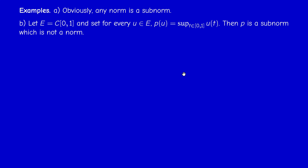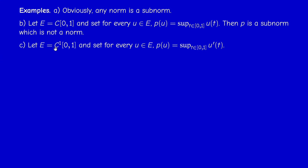This is a sub-norm but not a norm, because if P(u) = 0, it doesn't mean u = 0; it just means u is negative or zero, since we are not taking the absolute value. Similarly, if we take the space of continuously differentiable functions on [0,1] and set P(u) = sup of u′ (the derivative is continuous here), we again get a sub-norm. This is not a norm because if P(u) = 0, we can only conclude u′ ≤ 0, and u could be a non-zero constant.